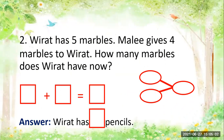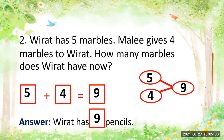Number two: Wirat has five marbles and Mali gives four marbles to Wirat. How many marbles does Wirat have now? We will write the addition sentence: five plus four is equals to nine. So five and four makes nine. The answer is Wirat has nine marbles all together.